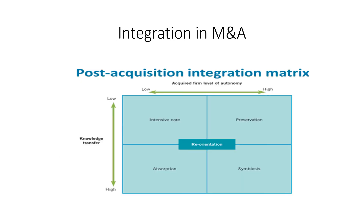Integration in M&A has two key criteria resulting in five integration approaches with important implications for the length of the integration period and choice of top management. The first approach is absorption, preferred where there is high strategic interdependence and little need for organizational autonomy. Absorption requires rapid adjustment of the acquired company's strategies and structures to the owner's needs, including cultural changes. It is usual to appoint a new top manager in this type of acquisition.